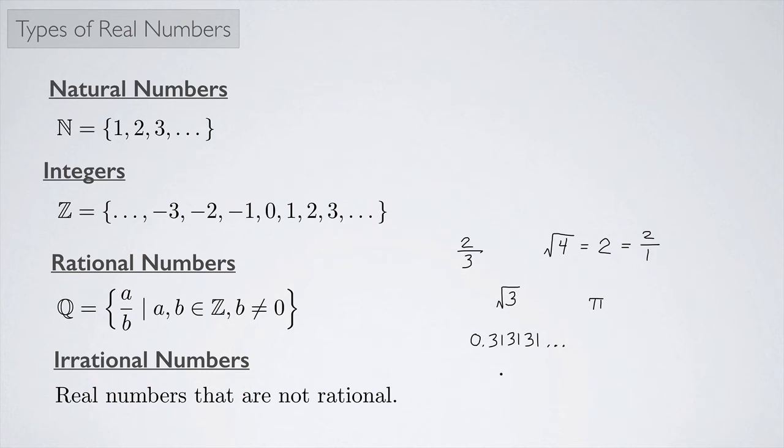But if it doesn't repeat, like we know pi can be written as a decimal as 3.14159. And then it keeps going and going and going and it doesn't repeat. This is irrational.